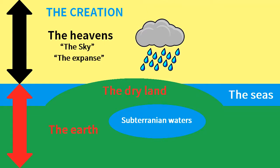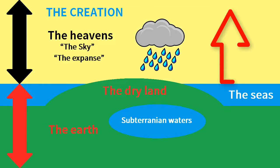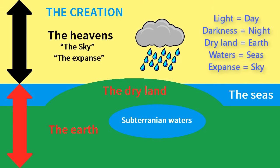The Bible never speaks of a solid dome in the sky. Rather, the expanse is the sky extending upwards from the surface of the earth. Thus Genesis defines its own words by ordinary terms applied to the visible world: light is day, darkness is night, dry land is earth, waters are seas, and expanse is the sky.